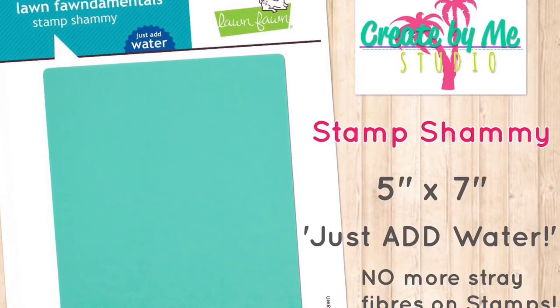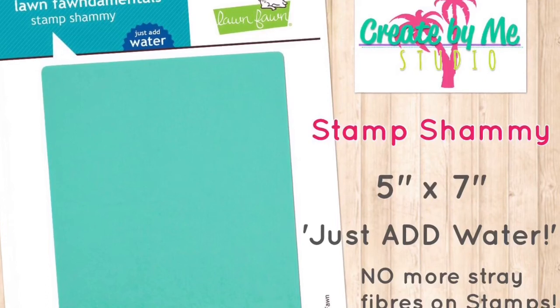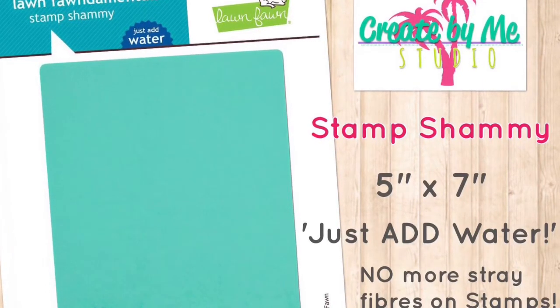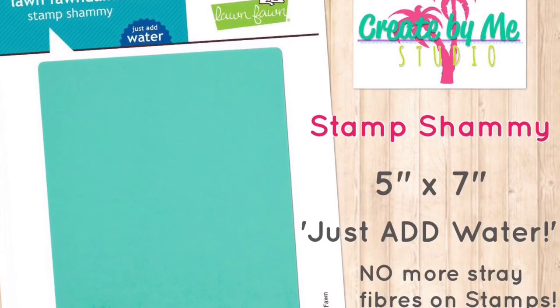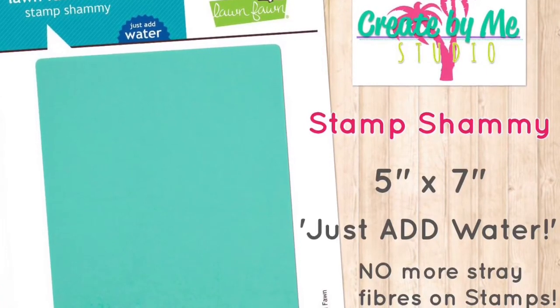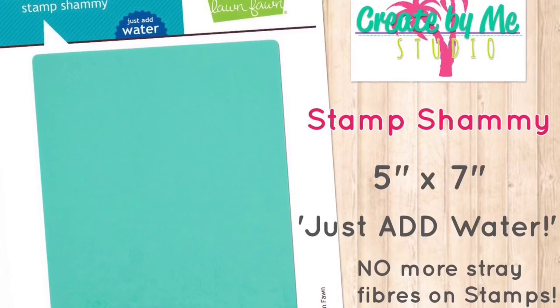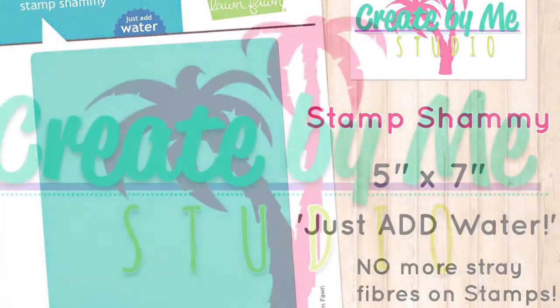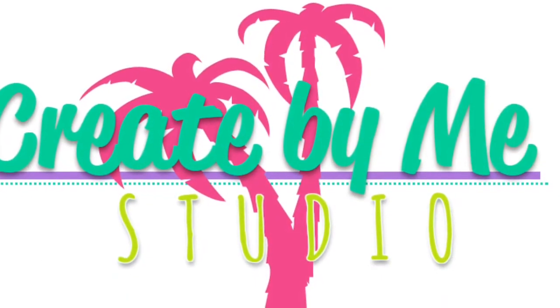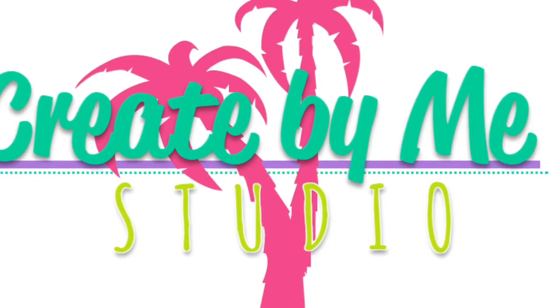Now the greatest thing about these is there's no more stray fibers that you find on your stamp when you've stamped, because the fibers that the stamp chamois is made from don't have any stray fibers that come off it, unlike wipes. Thanks for watching this video. I hope it helped and I'll see you in the store. Bye.